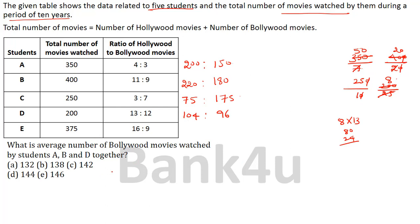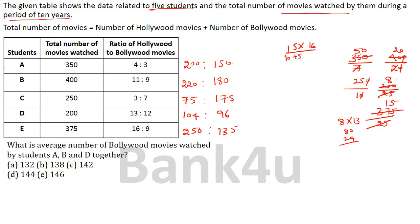For student E, total is 375 and the ratio is 16 is to 9. So 16 plus 9 equals 25. 375 divided by 25 equals 15. So Hollywood = 15 into 16. Now 16 into 10 is 160 and 16 into 5 is 80, giving 240. And Bollywood = 15 into 9 = 135. I made a mistake earlier saying 250; the correct answer is 240. The split is 240 is to 135.